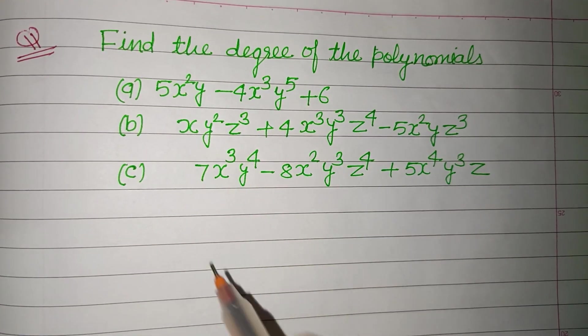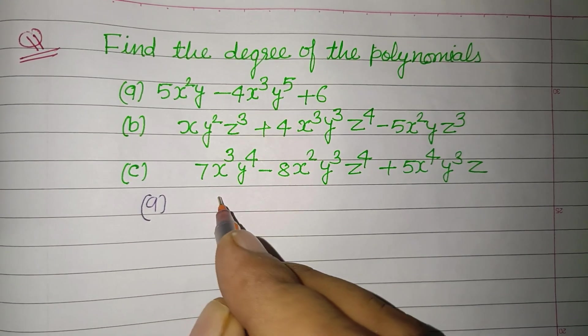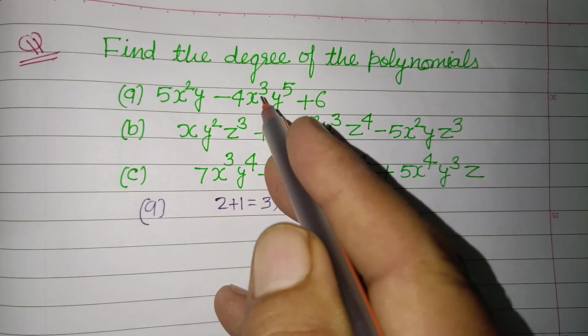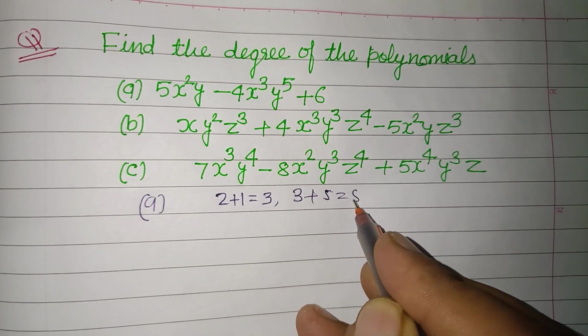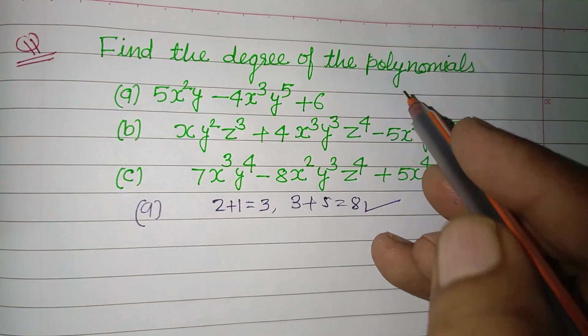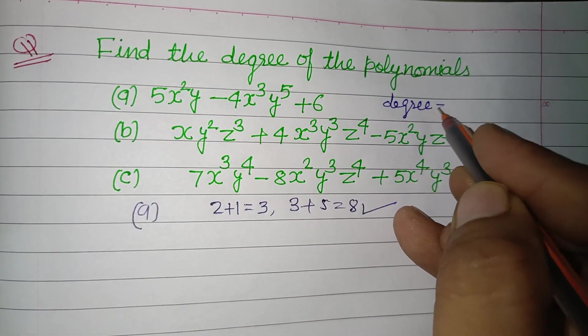So in first a, here power of first term is 2 plus 1, 3. Power of second term is 3 plus 5, 8. So 8 is the greatest power, therefore its degree is 8.